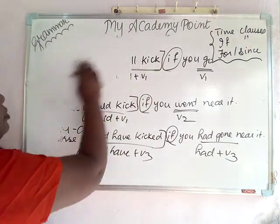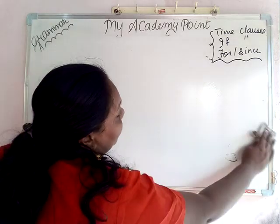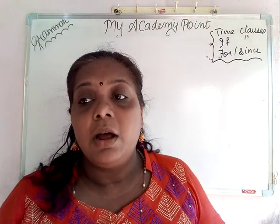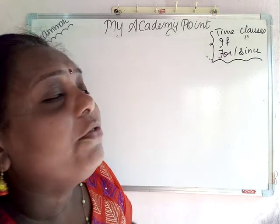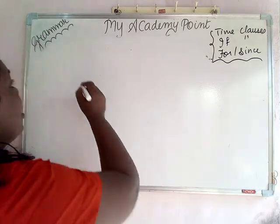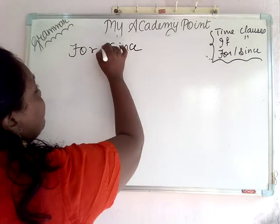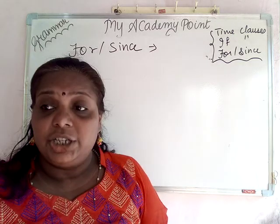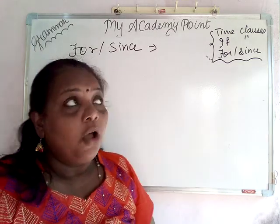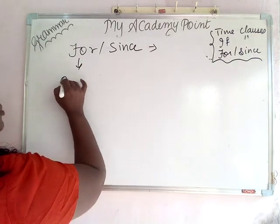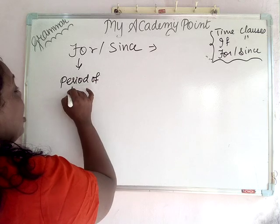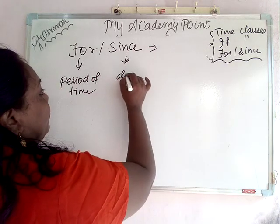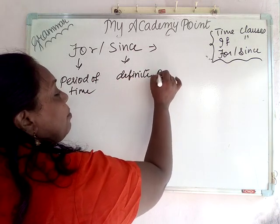Now I will explain about for and since. For and since are both prepositions of time. They answer the question 'how long.' 'For' refers to a period of time, and 'since' refers to a definite point of time.